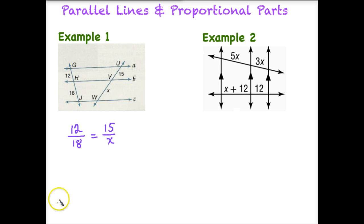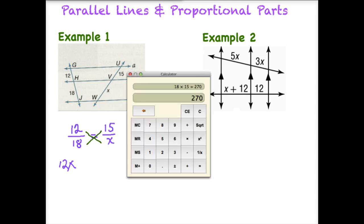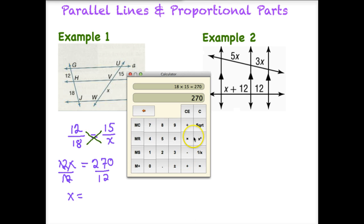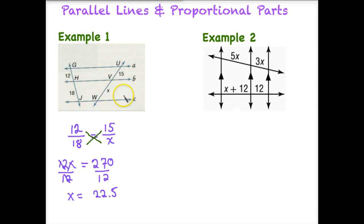And then all we need to do is cross-multiply. So we can take X times 12, and get 12X, and then we can take 18 times 15, and we'll get 270. In order to solve for X, we just divide both sides by 12. 12 divided by 12 is just 1, or 1X, and then we can divide 270 by 12, and get 22.5. So 22.5 units, using proportions.